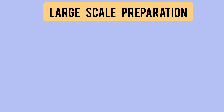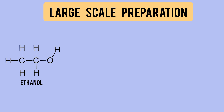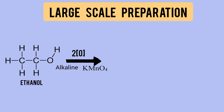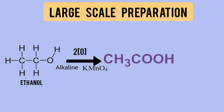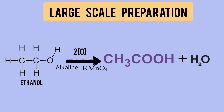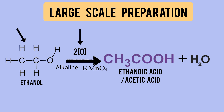For large scale industrial preparation, they take ethanol. Ethanol is oxidized using Alkaline KMnO4. When oxidized, one oxygen is added, and it becomes CH3COOH — that is Acetic Acid or Ethanoic Acid. So, ethanol oxidized with Alkaline KMnO4 gives Acetic Acid.